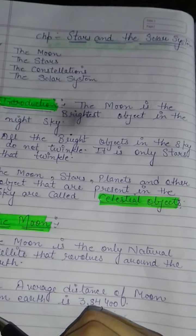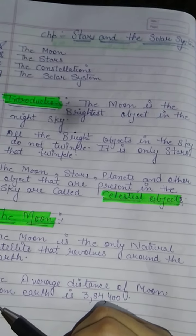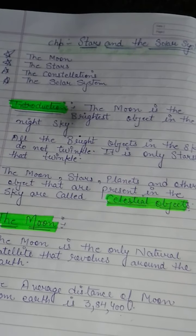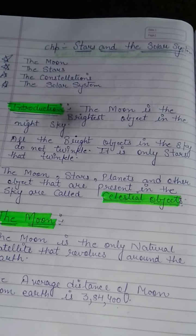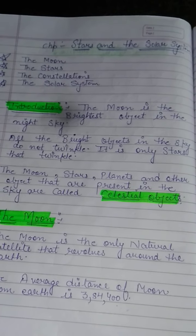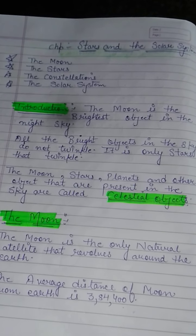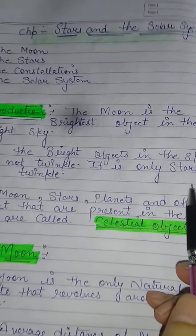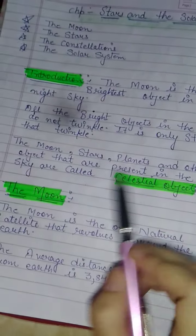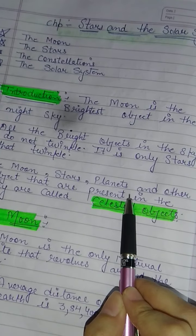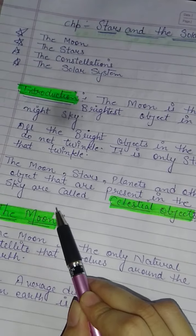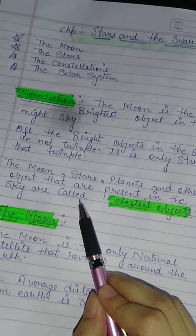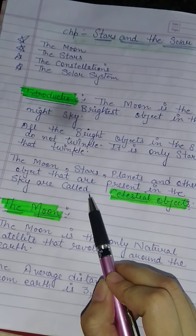The Moon is the brightest object in the night sky. All the bright objects in the sky do not twinkle — it is only stars that twinkle. The Moon, stars, planets, and other objects that are present in the sky are called celestial objects.